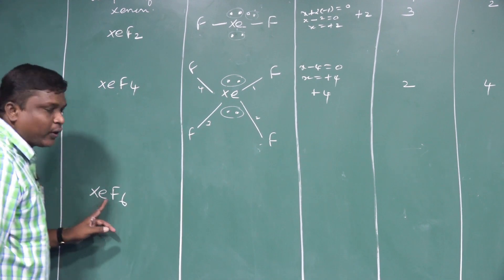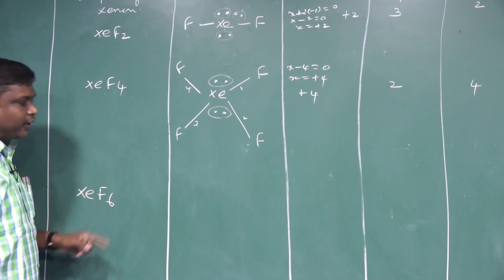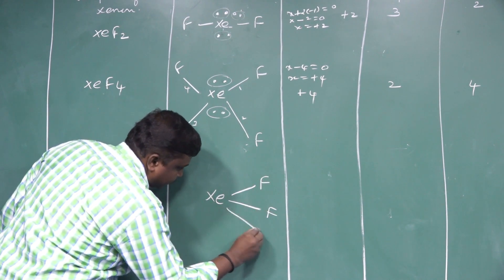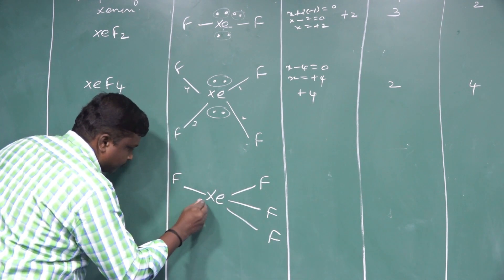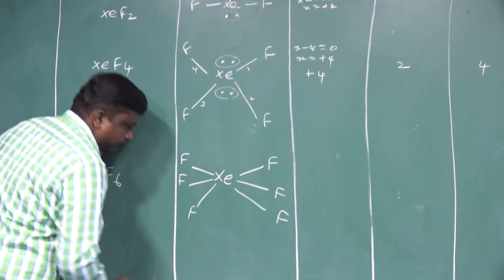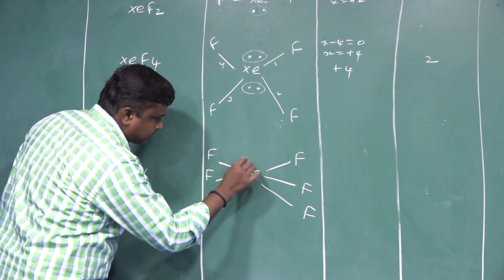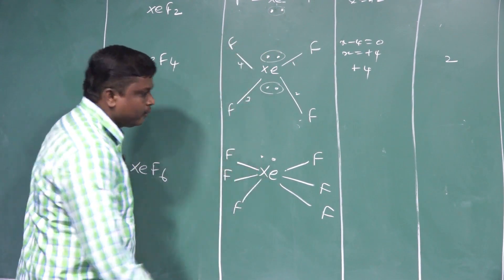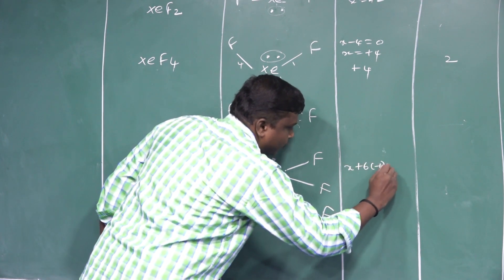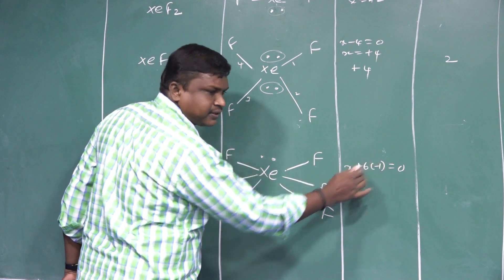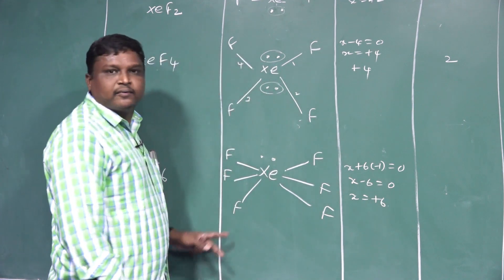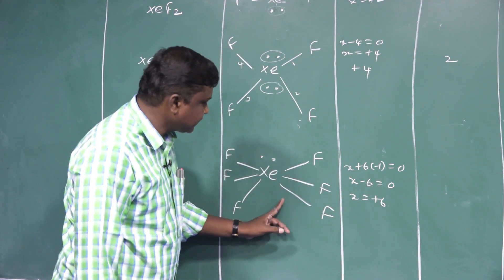Third compound: XeF6 (xenon hexafluoride). To calculate oxidation state: x + 6×(−1) = 0, because fluorine has a negative oxidation state, so x − 6 = 0, giving x = +6 oxidation state.